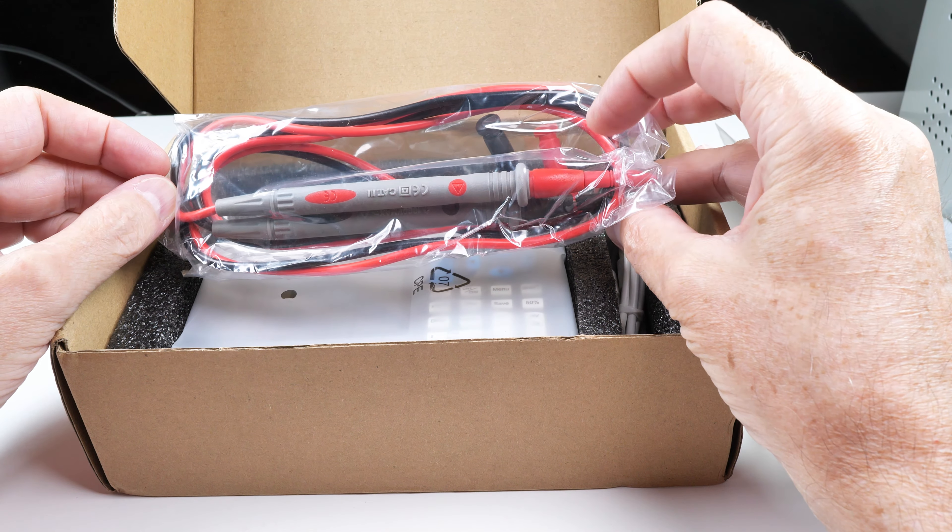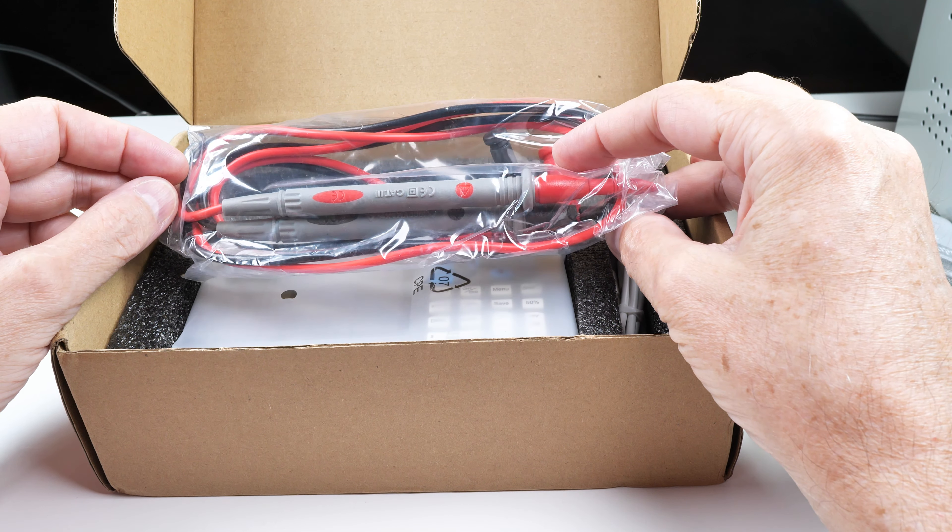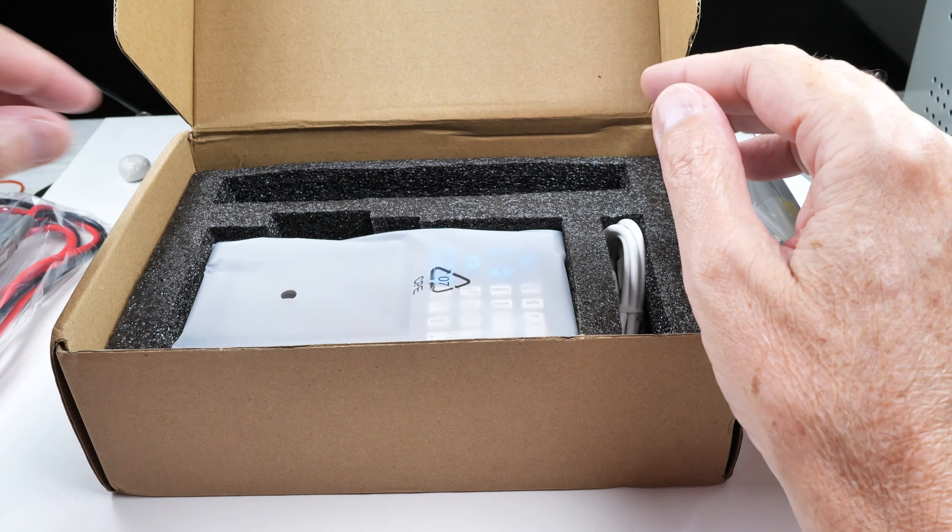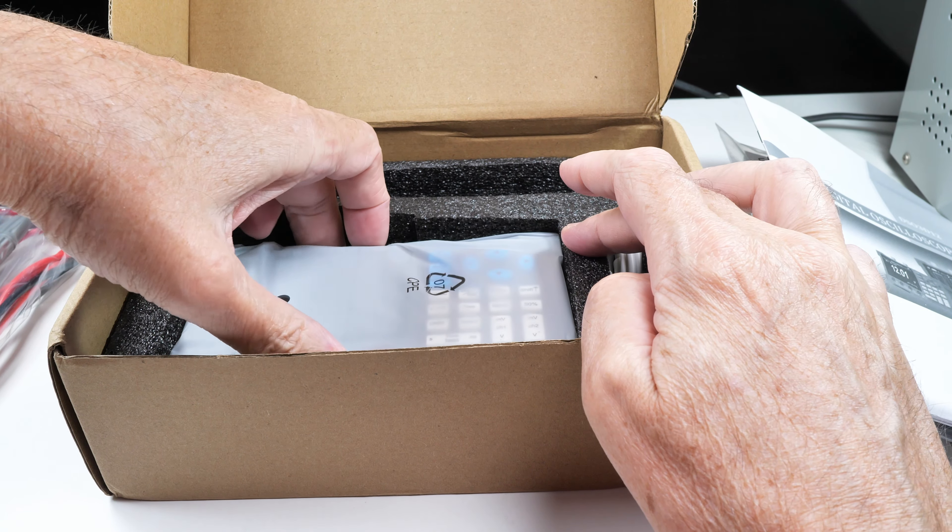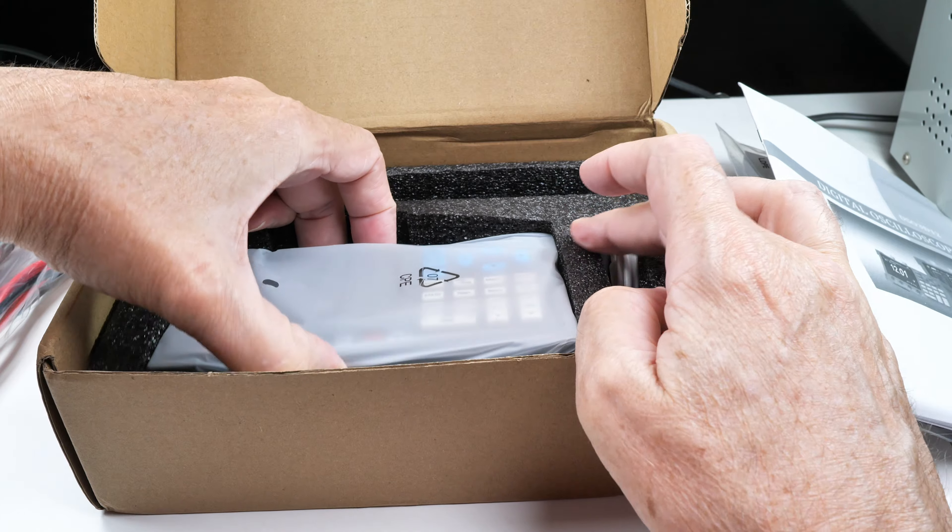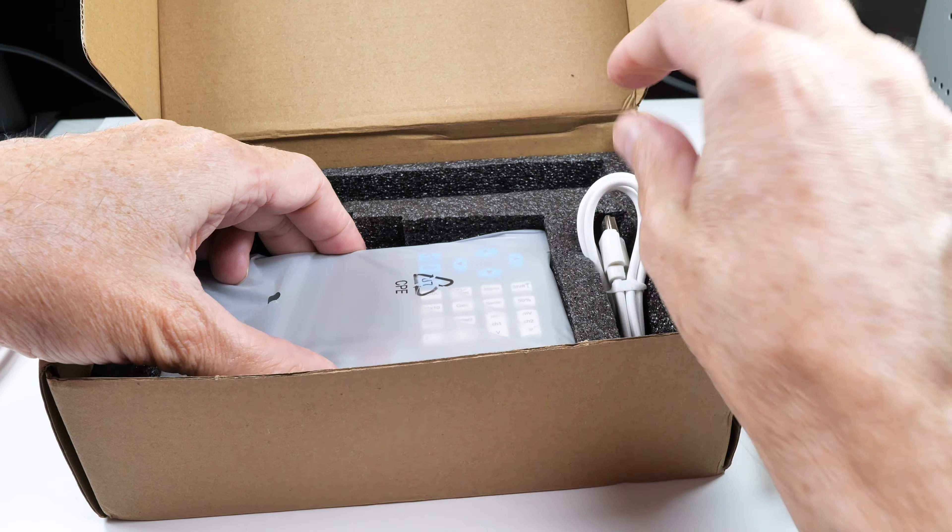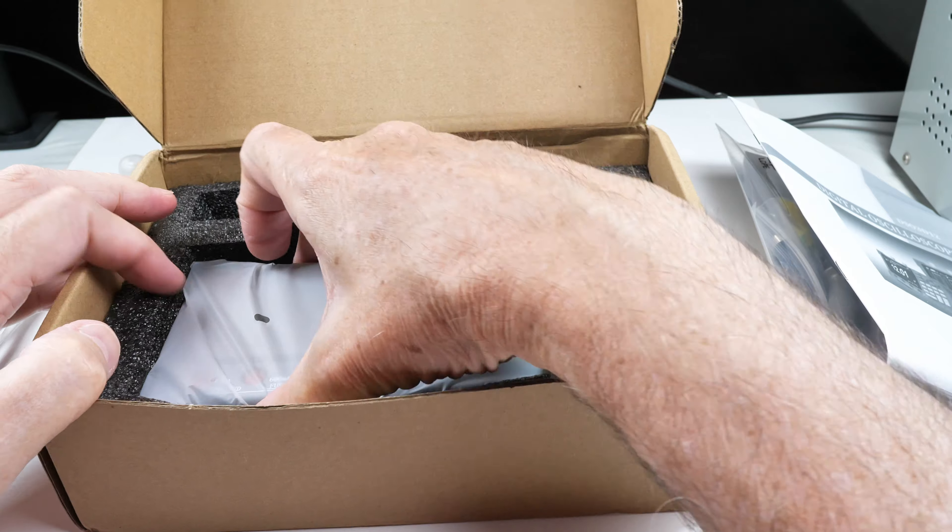So these are more like probes for a voltmeter. Okay, so we have probes for an oscilloscope, probes for a voltmeter. What is this thing before I move on? Power cord, and let's get this thing out of here.